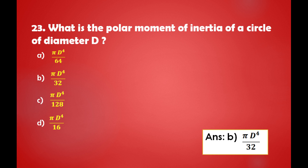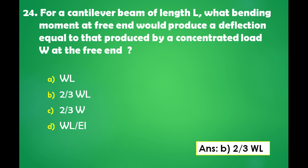What is the polar moment of inertia of a circle of diameter D? A) πD⁴/64, B) πD⁴/32, C) πD⁴/128, D) πD⁴/16. The answer is: the polar moment of inertia of a circle of diameter D is πD⁴/32.